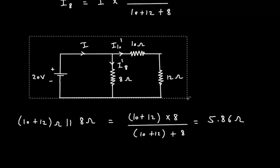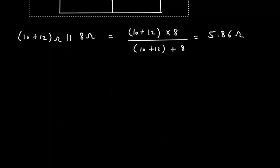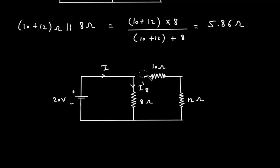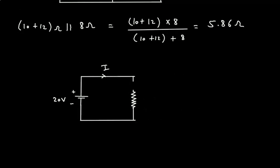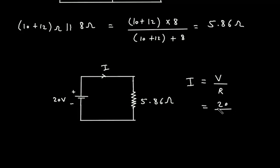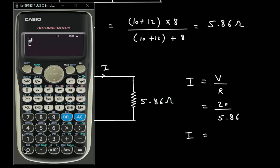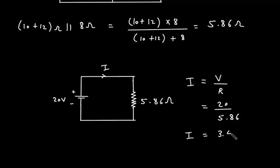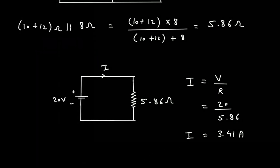We can replace these resistances with a single resistor of 5.86 ohm. Now we can easily find I using Ohm's law: I = V divided by R. V is 20 volt and R is 5.86 ohm. Therefore, I = 20 divided by 5.86, which equals 3.41 ampere.